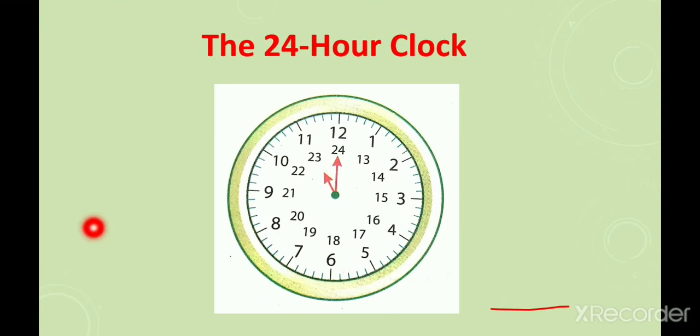Look at the 24-hour clock. It starts from 1 to 12, or you can say 12 to 24. It helps us to know the correct time of arrival and departure of trains, planes, or buses without confusion of AM or PM. Arrival and departure times are usually stated in 24-hour clock time.